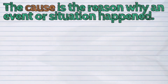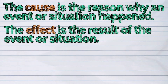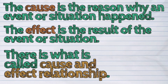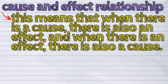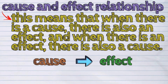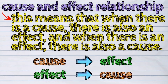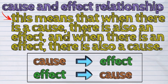The cause is the reason why an event or situation happened. The effect, on the other hand, is the result of the event or situation. There is what is called a cause and effect relationship. This means that when there is a cause, there is also an effect. And when there is an effect, there is also a cause. So, cause and effects are always related to each other.